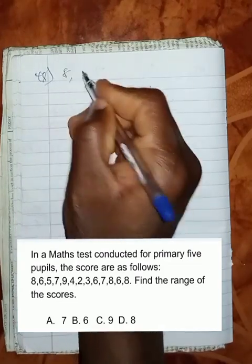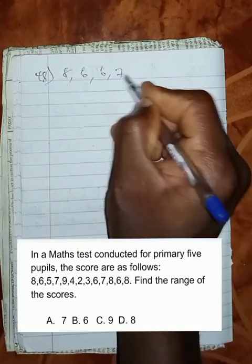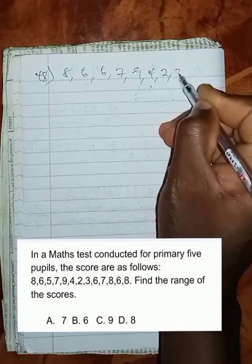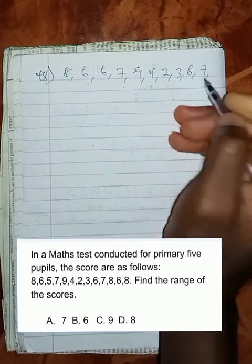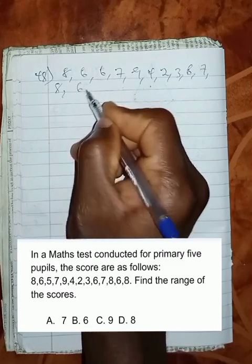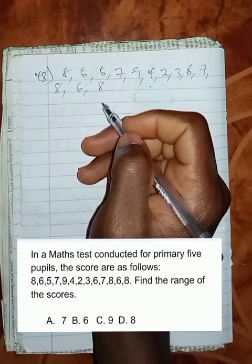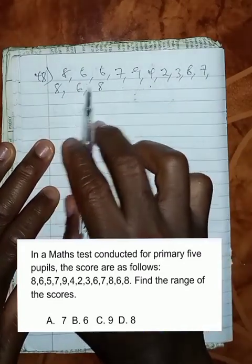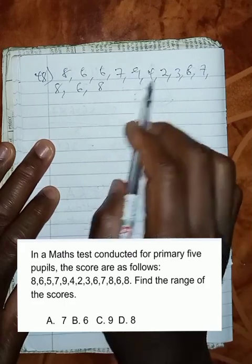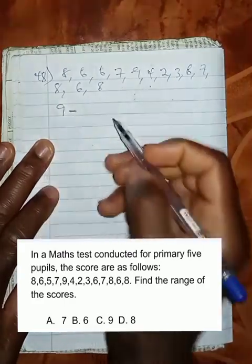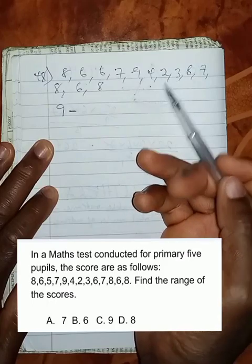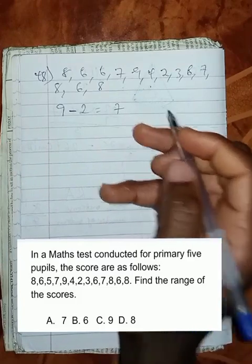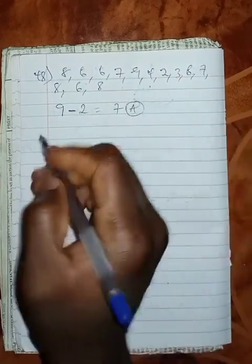Let me write out the scores: 8, 6, 6, 7, 9, 4, 2, 3, 6, 7, 8, 6, 8. What would the range be? Range is simply the difference between the higher value and the lower value. The highest value here must be 9 minus the lower value must be 2. If we subtract this, the range becomes 7, which is option A.